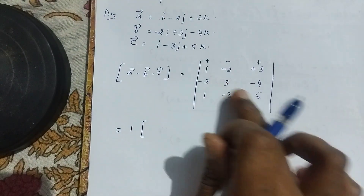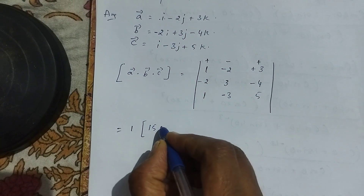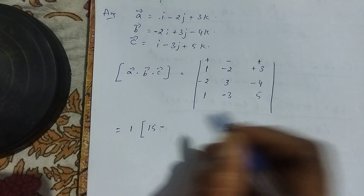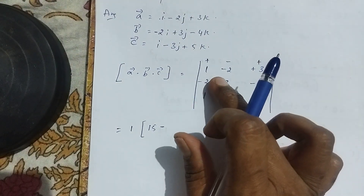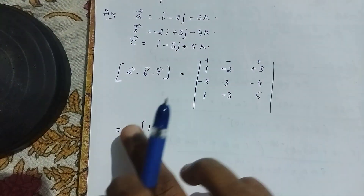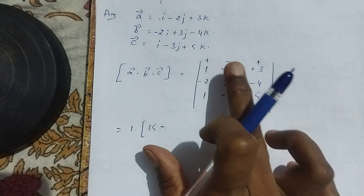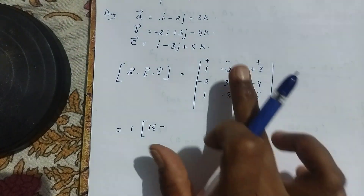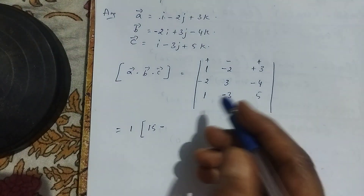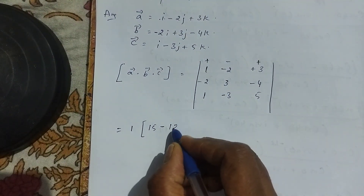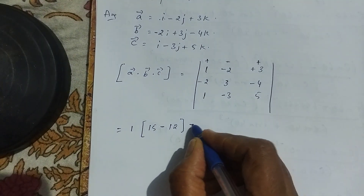For the first element (1), we leave its row and column and multiply the remaining 2x2 sub-matrix: 3 times 5 is 15, minus minus 4 times minus 3. Minus into minus is plus, giving plus 12. So the first term gives 1 times (15 minus 12), which is 1 times 3, equals 3.